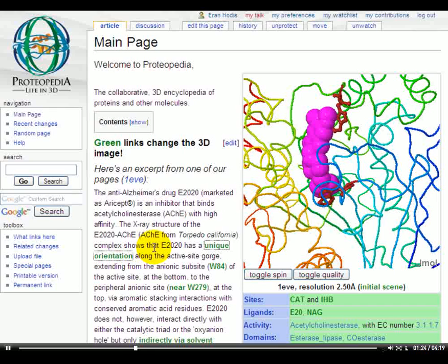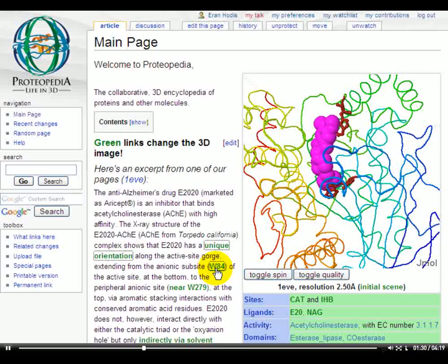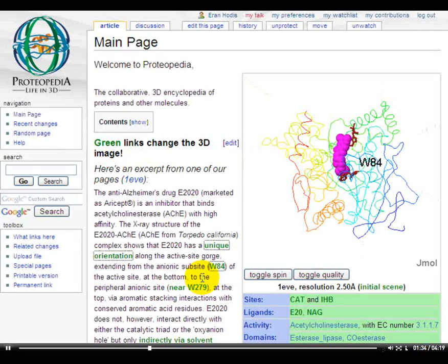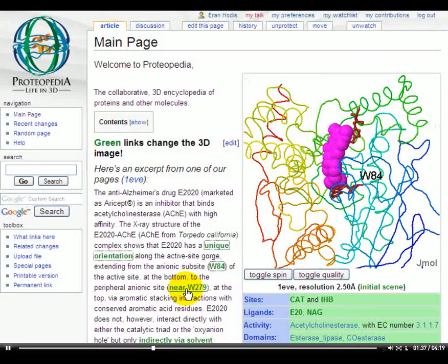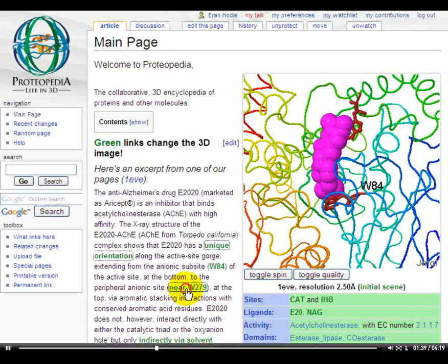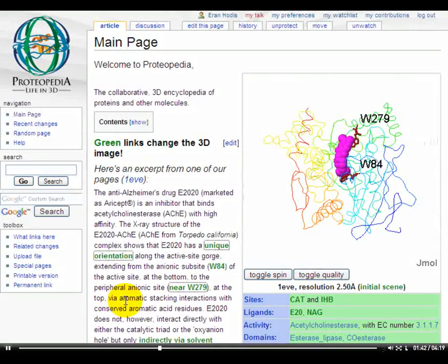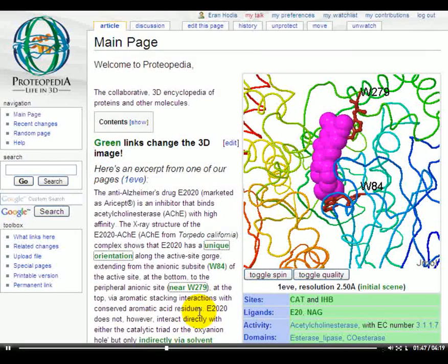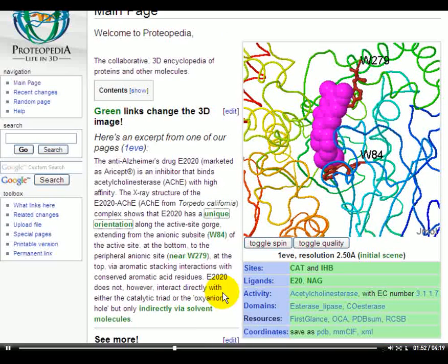E2020 has a unique orientation along the active site gorge, extending from the anionic subsite tryptophan-84 of the active site at the bottom to the peripheral anionic site near tryptophan-279 at the top via aromatic stacking interactions with conserved aromatic acid residues. E2020 does not, however, interact directly with either the catalytic triad or the oxyanion hole, but only indirectly via solvent molecules.